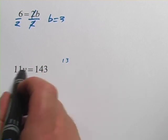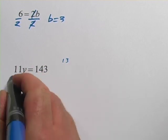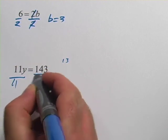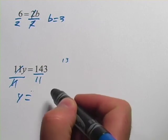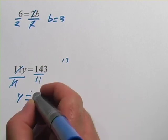So in algebra we'd say undo this 11 multiplied by y by dividing by the 11, but do it to both sides. The 11's would cancel. You get y equals 143 divided by 11, and that is 13.